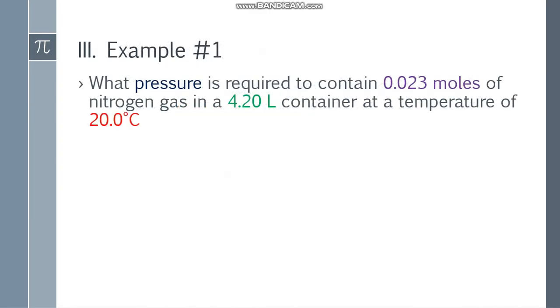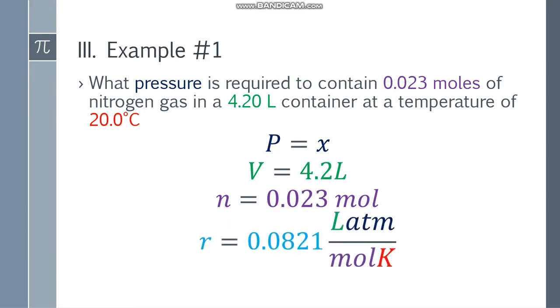Now, let's have the first example. What pressure is required to contain 0.023 moles of nitrogen gas in a 4.20 liter container at a temperature of 20 degrees Celsius? Pressure natin, we don't know, so that will be x. Volume, that will be 4.2 liters. Ang n natin, that will be 0.023 moles.